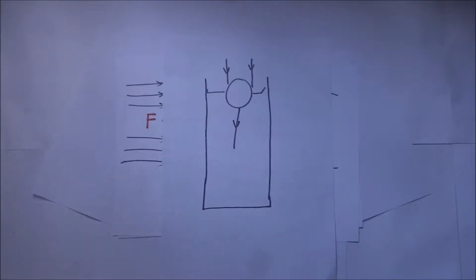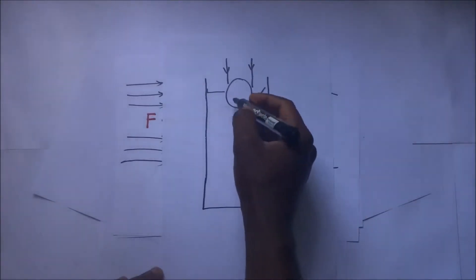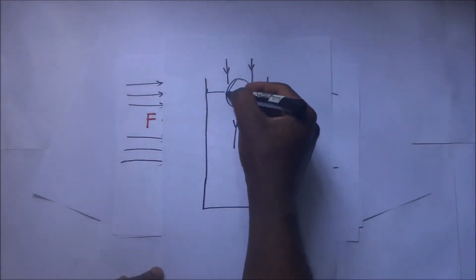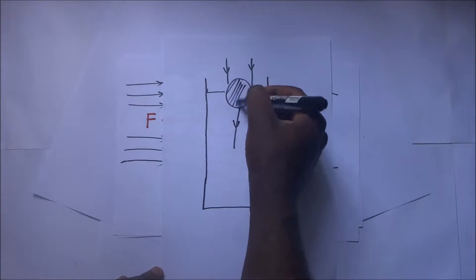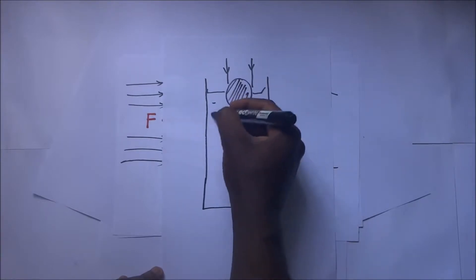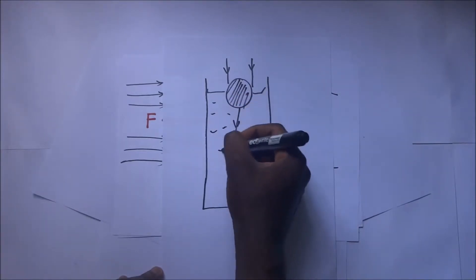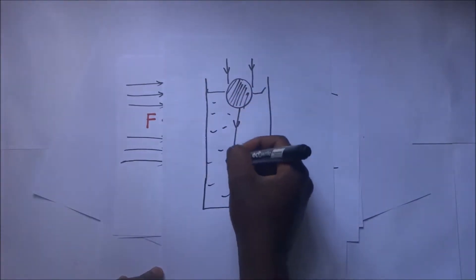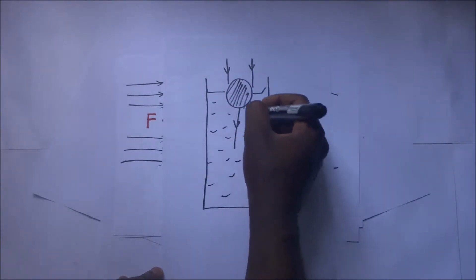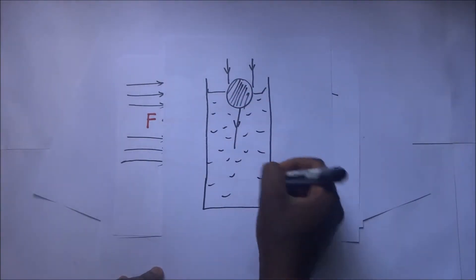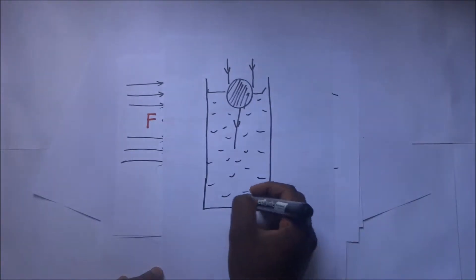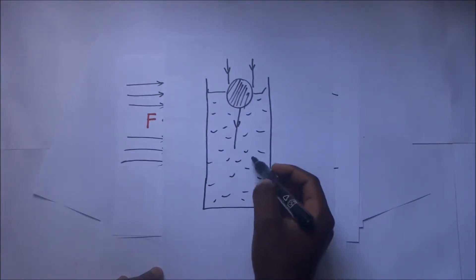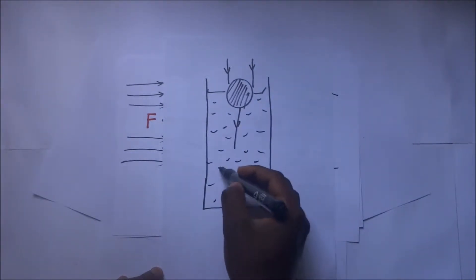Right before us we have a diagram. This is a sphere in a jar, or rather a very long cylinder, that contains some thick fluid.